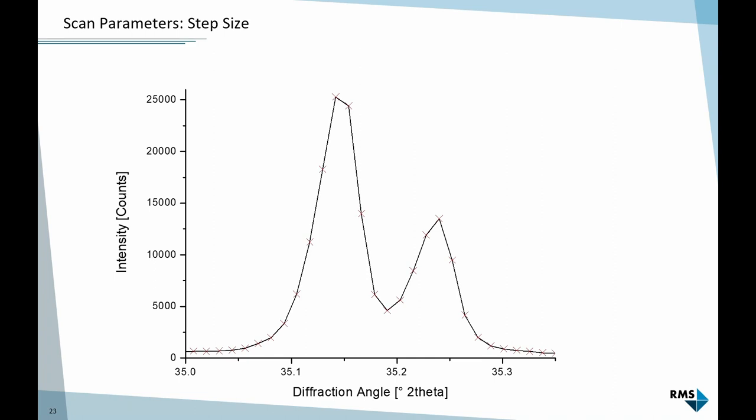The next parameter is step size - how often should we sample the pattern? There's a general recommendation that every peak should be described by at least five data points. In this example, if I consider this to be the main part of the peak, I'm using seven data points. The step size was 0.0122 degrees two-theta. This is what I want to achieve.